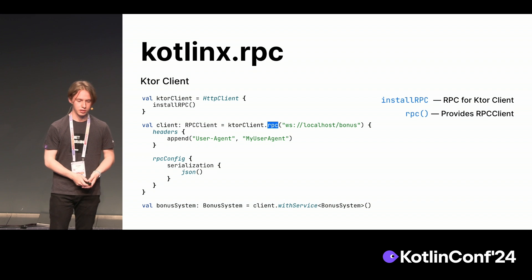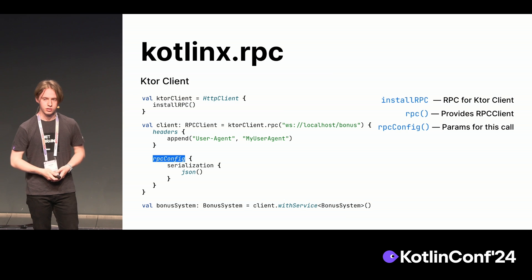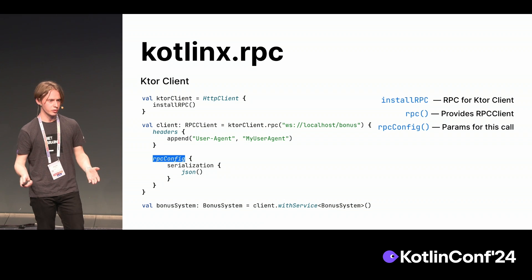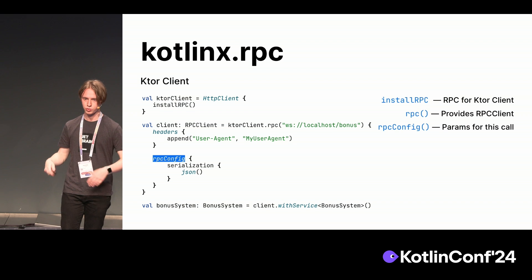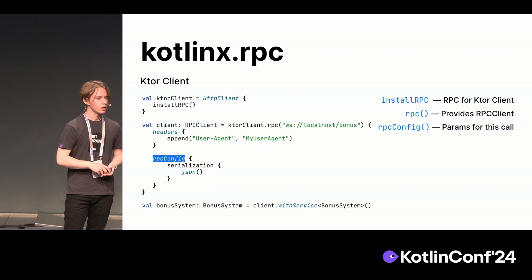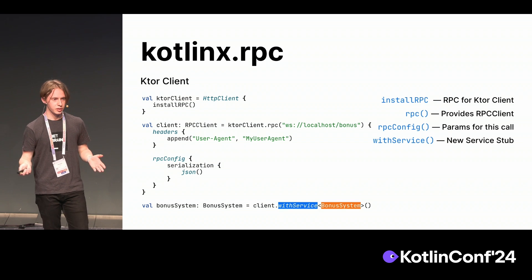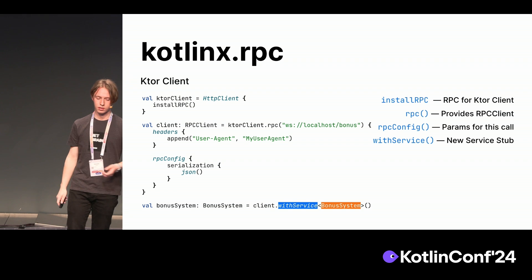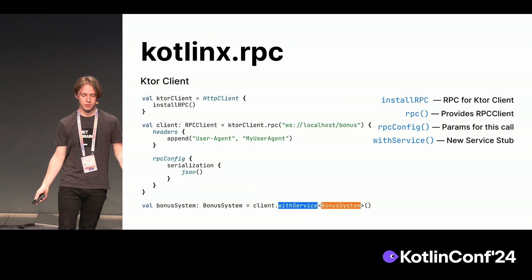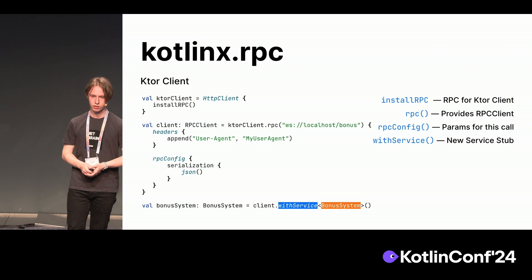The RPC function works like a regular Ktor function — you can use custom headers there. Inside this RPC function, you can define the configuration, for example, for serialization of your request. You can choose a format from the available Kotlinx formats: right now it's JSON, protobuf, and CBOR. There are also some other parameters you might want to add to your RPC client. Then you have the familiar RPC client on which you call the withService function to obtain an instance of your service and work with it like a regular class.